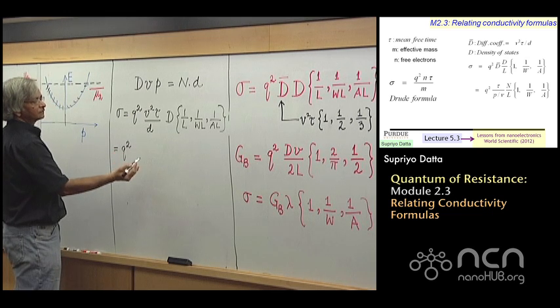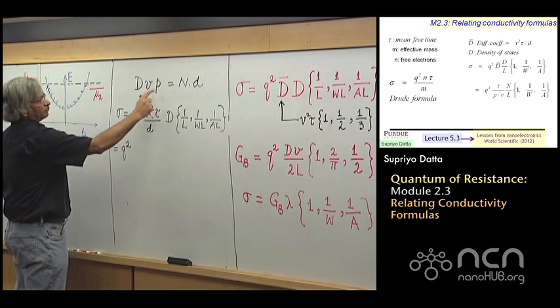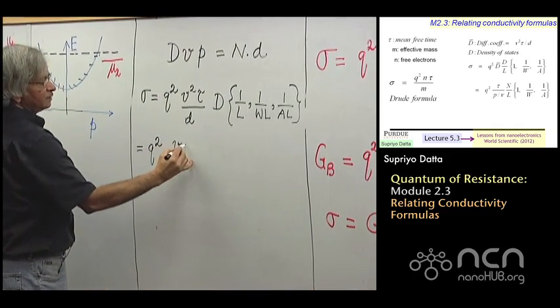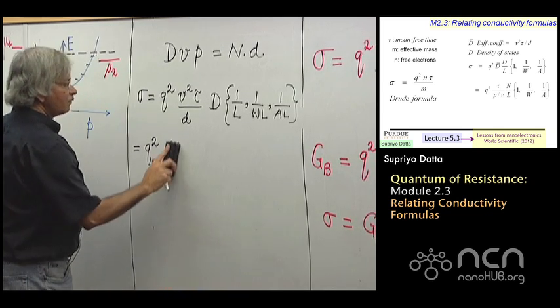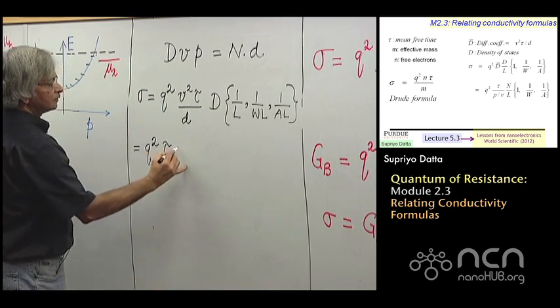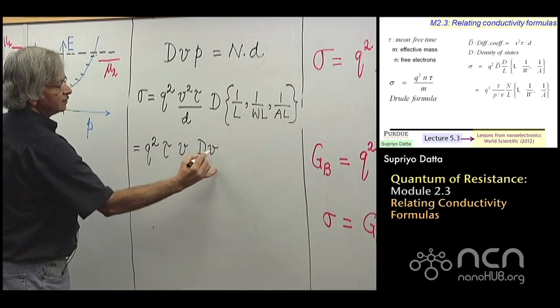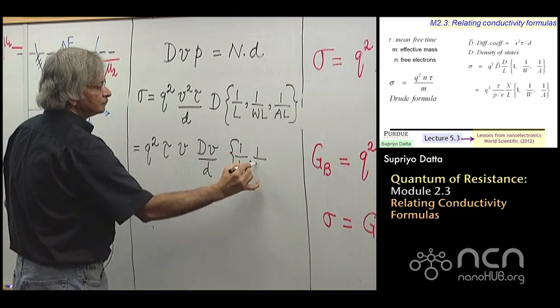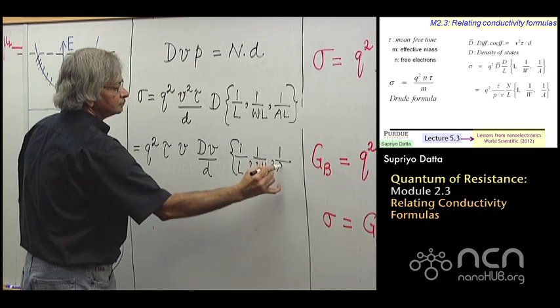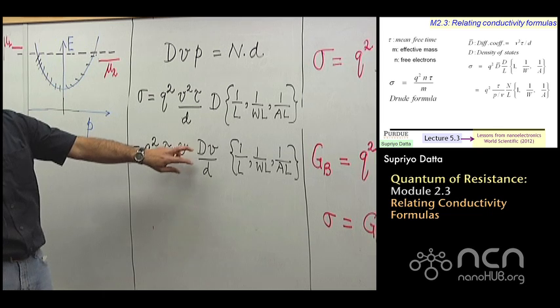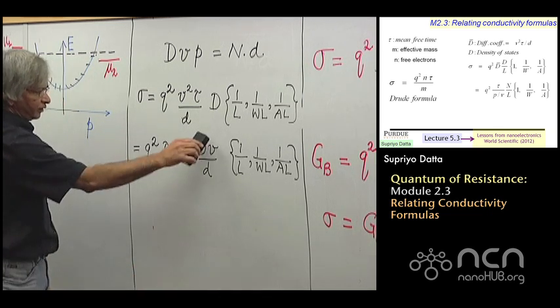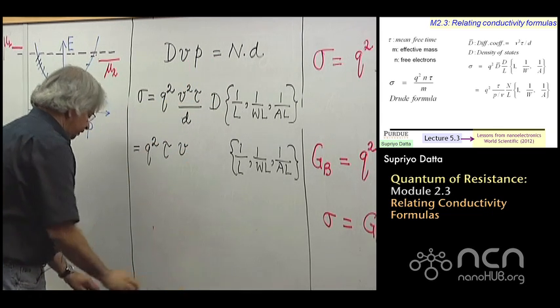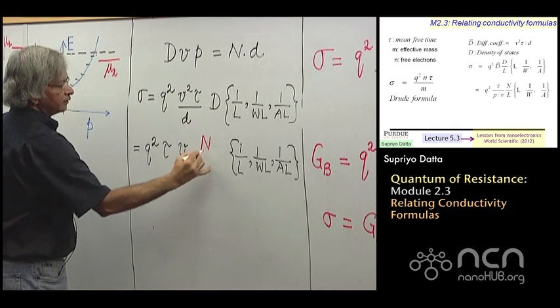So what you would have is something like this, tau, v, and then dv divided by d. And what I'm saying is, we could replace that quantity, dv divided by the number of dimensions with n divided by p. So I could write here, n divided by p.